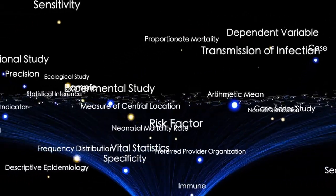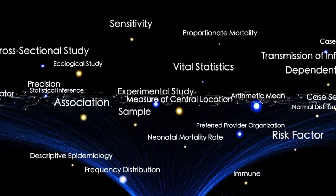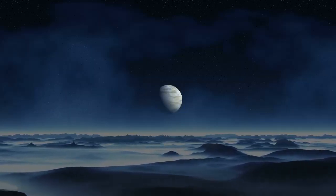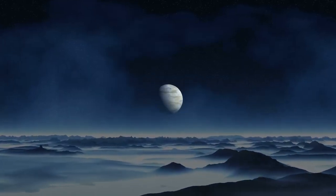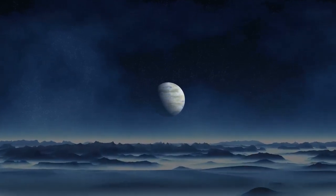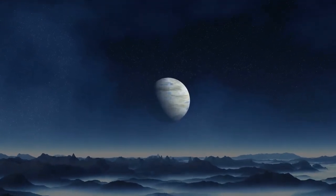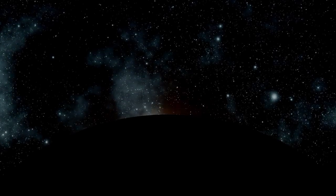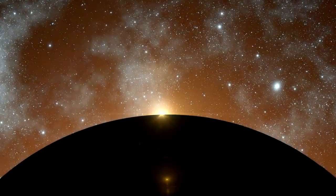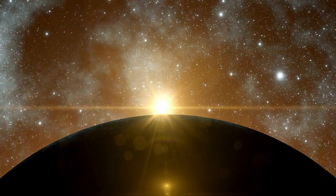But what truly set it apart was its orbit, just 0.05 astronomical units from its star, a mere tenth the distance between Mercury and our Sun. And yet, thanks to the much lower luminosity of Proxima Centauri, the planet falls comfortably within the habitable zone.